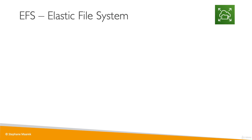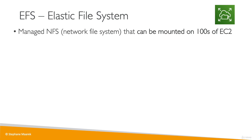Here's a third type of storage you can attach onto an EC2 instance, and this is a network file system or NFS. EFS stands for Elastic File System and it is a managed network file system. The key benefit is that it can be mounted to hundreds of EC2 instances at a time, making it a shared network file system or shared NFS.